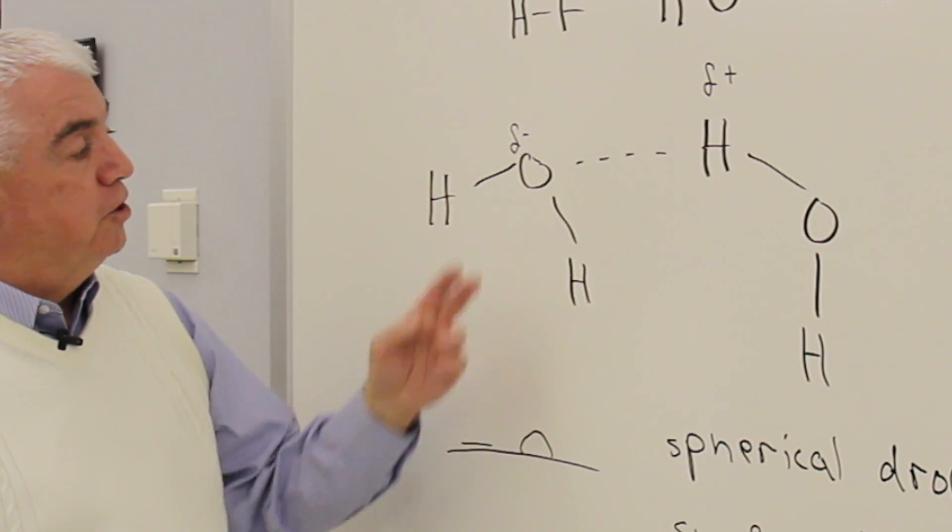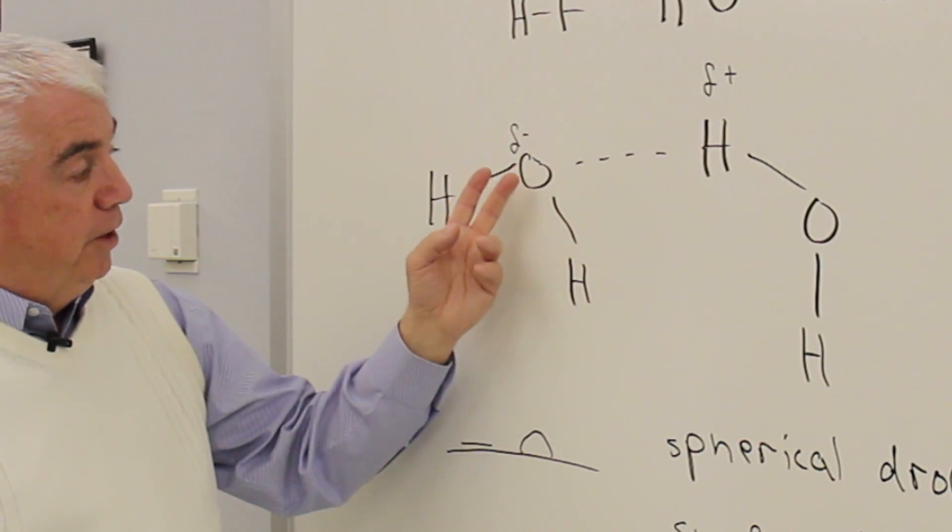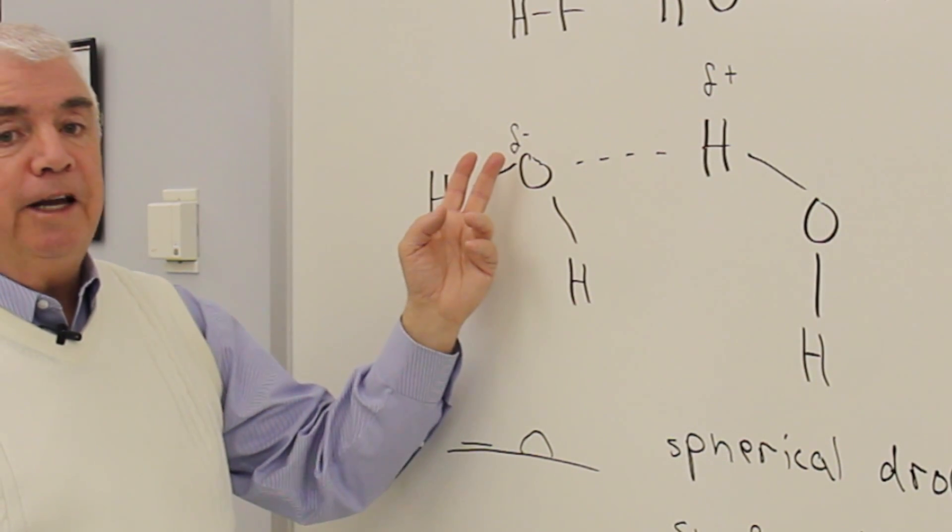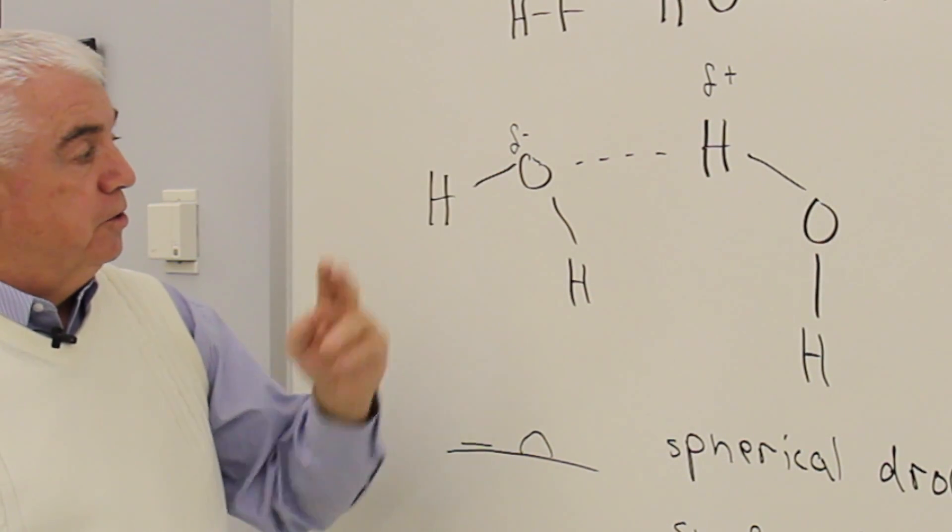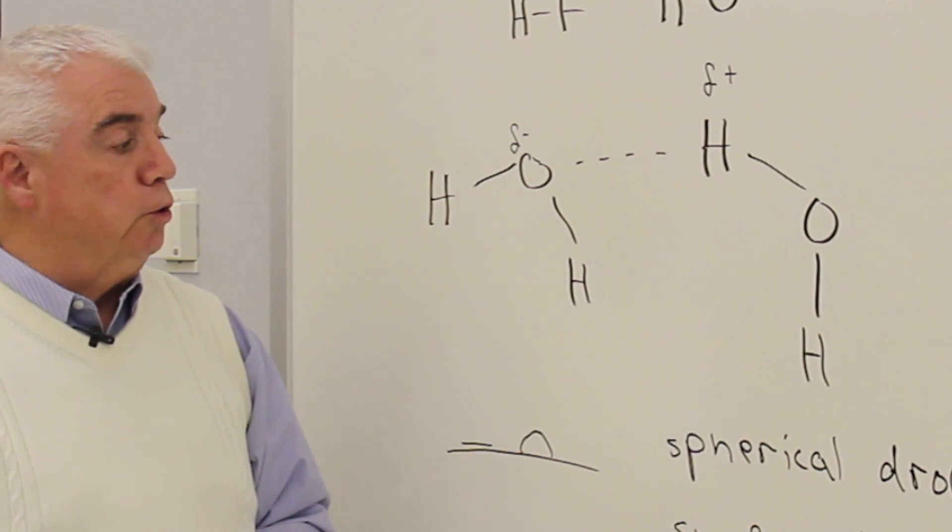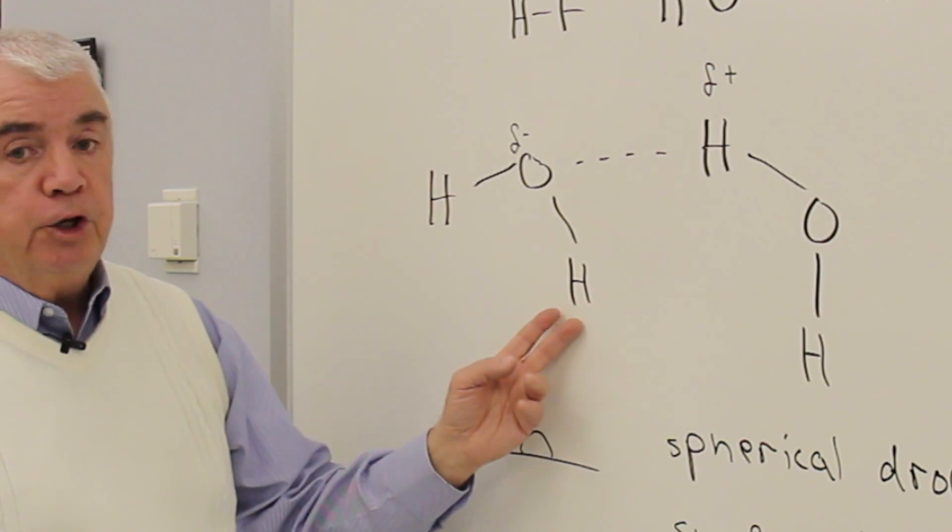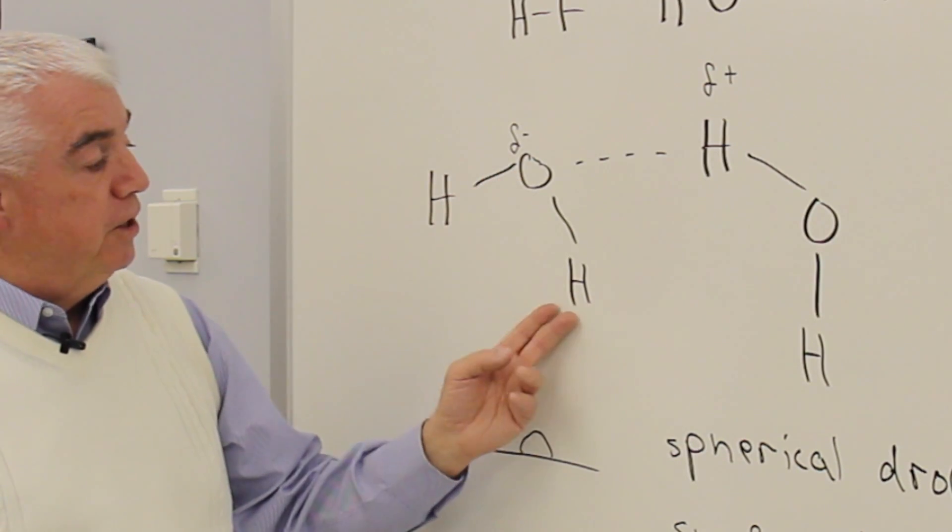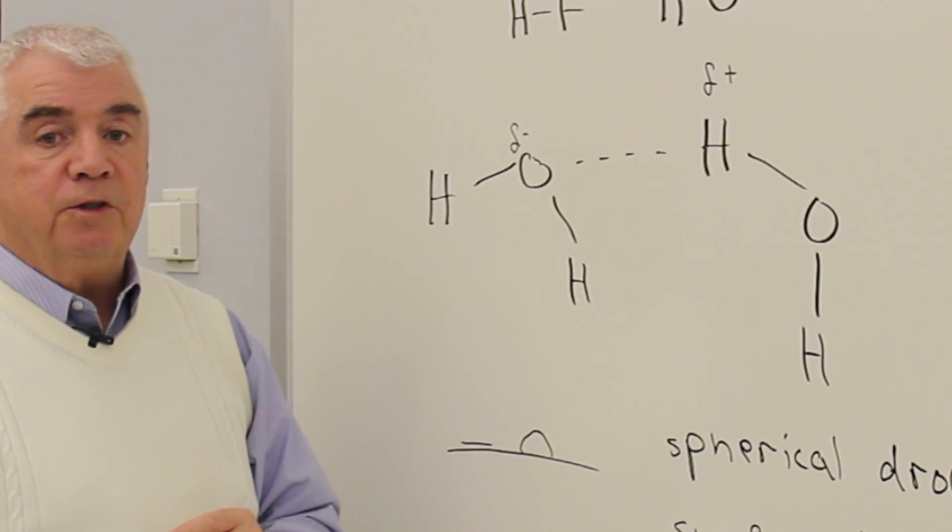To the extent that it does so, the oxygen has a partial negative charge. This is the Greek symbol delta. Delta minus means a partial charge. The hydrogen then, to the extent that this exists, would have a delta plus on it.